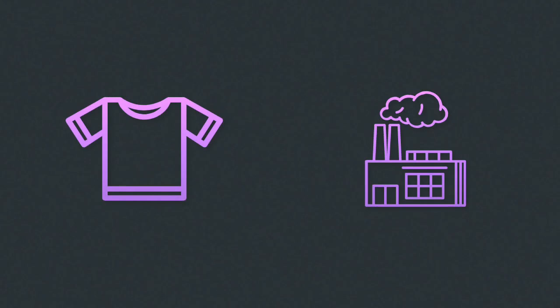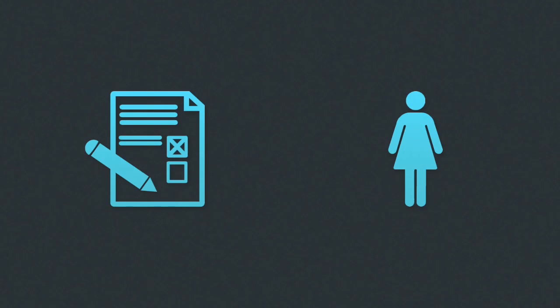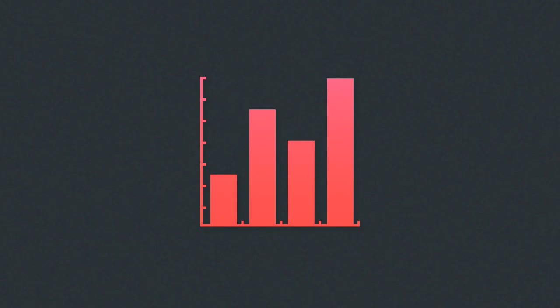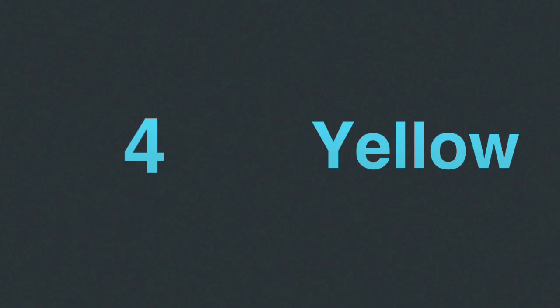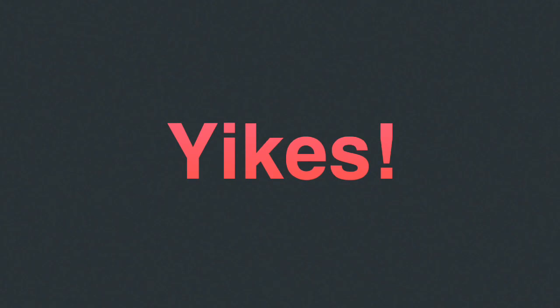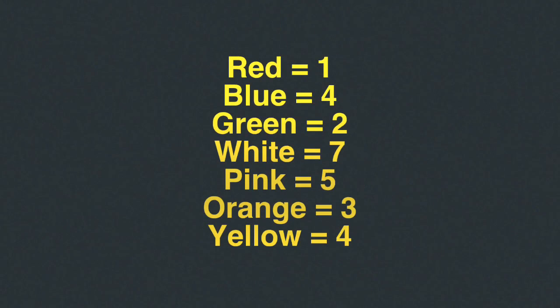There's a company creating t-shirts, and it decides to give out a survey to some girls to find out their favorite colors. When the survey is done, they collect all the data and find that one girl prefers red shirts best, four girls prefer blue t-shirts, two prefer green, seven prefer white, five girls like pink best, three girls prefer orange, and four girls like yellow t-shirts best. Let's put it all down in one place so we can look at it. On the left we have the color of the t-shirts, and on the right, how many girls picked that color as their favorite.